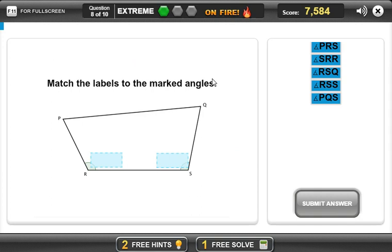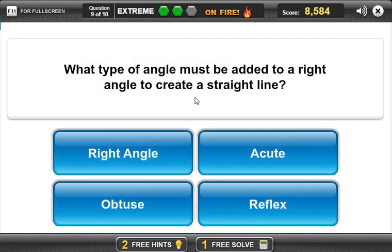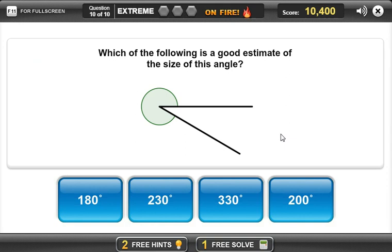Match the labels to the marked angles: P, R, S and R, S, Q. What type of angle must be added to a right angle to create a straight line? Another right angle. P, 30.